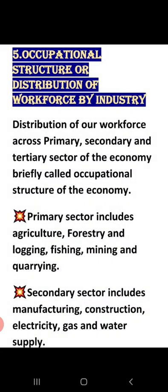Next is occupational structure or distribution of workforce by industry. Occupational structure refers to how the entire workforce is divided into three categories: primary, secondary, and tertiary. These three sectors together make up the occupational structure of the economy. The primary sector includes all production from the earth and inside the earth — agriculture, forestry, logging, fishing, mining, and quarrying.